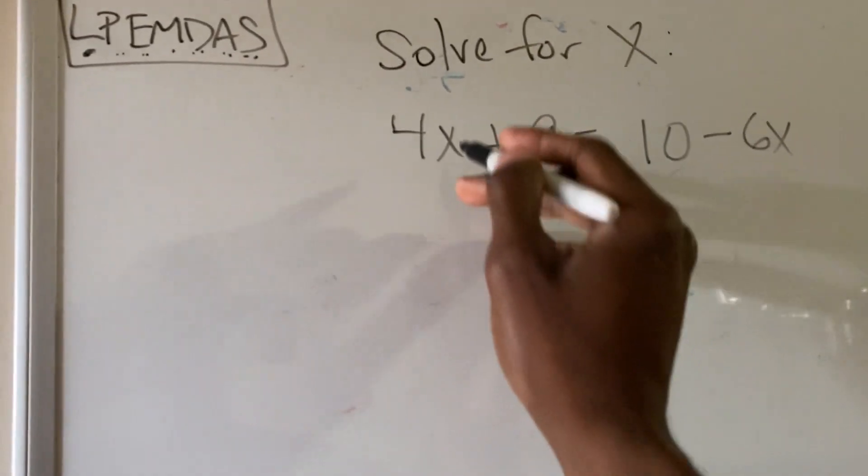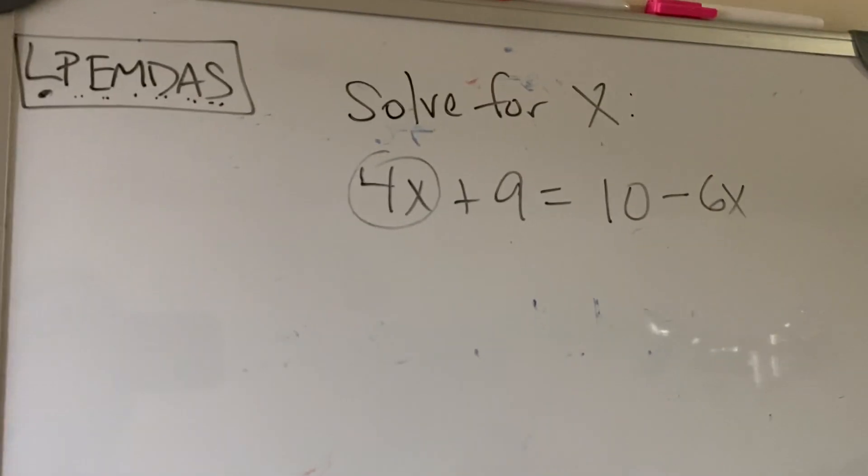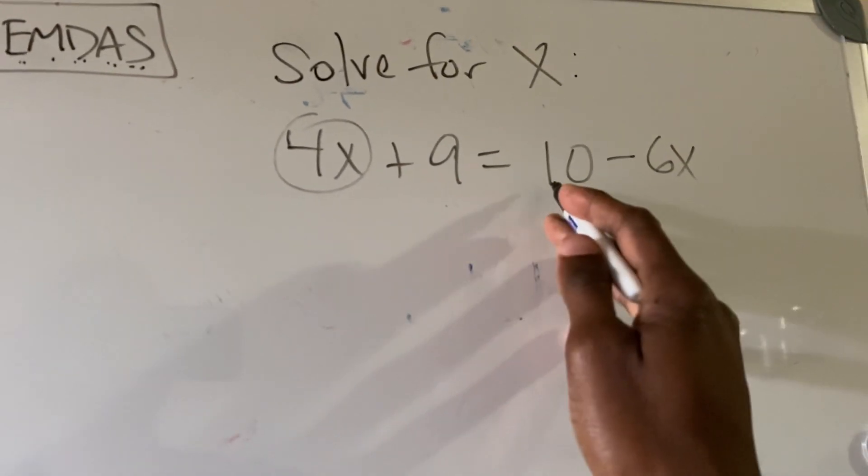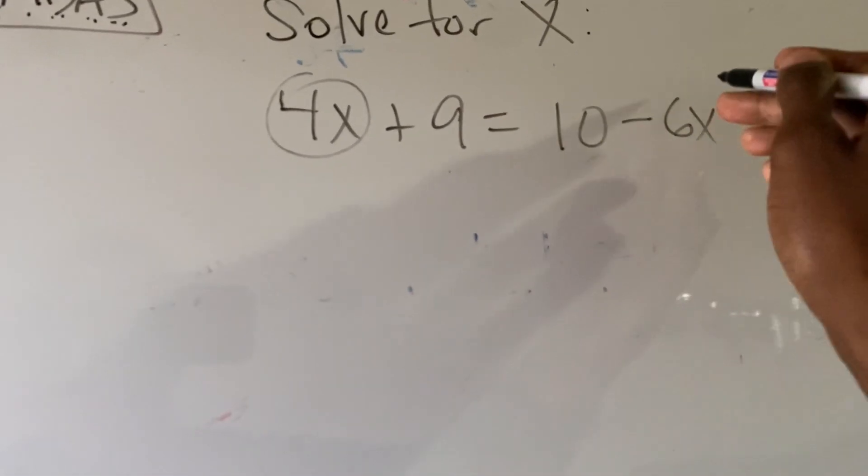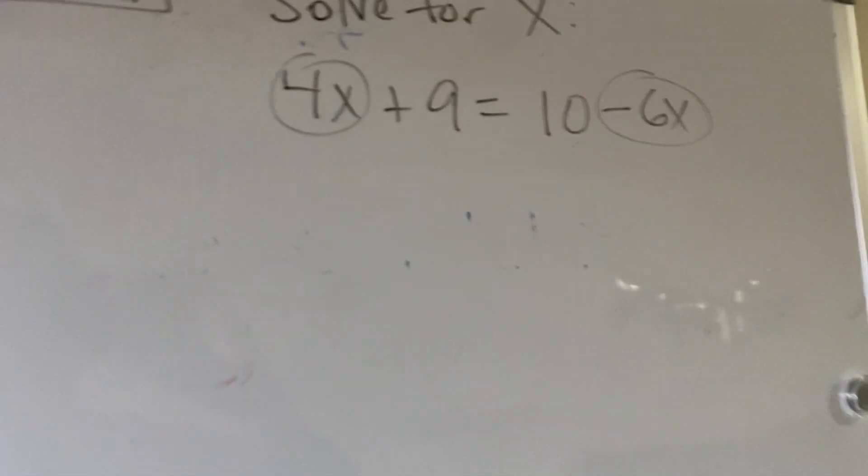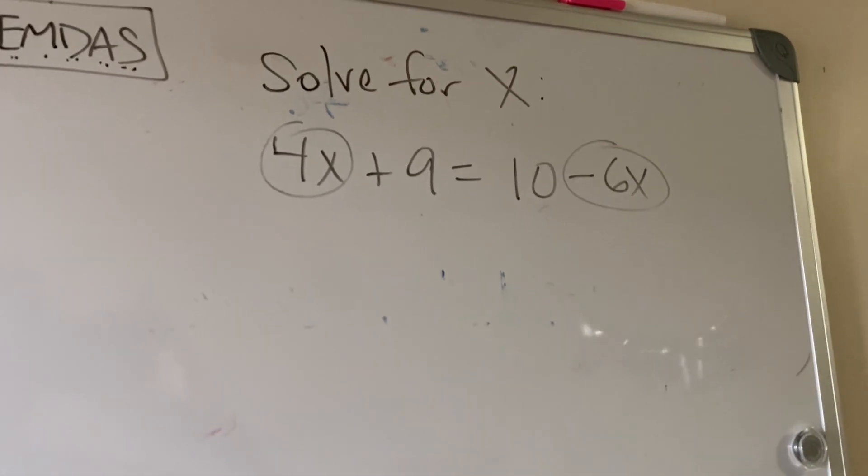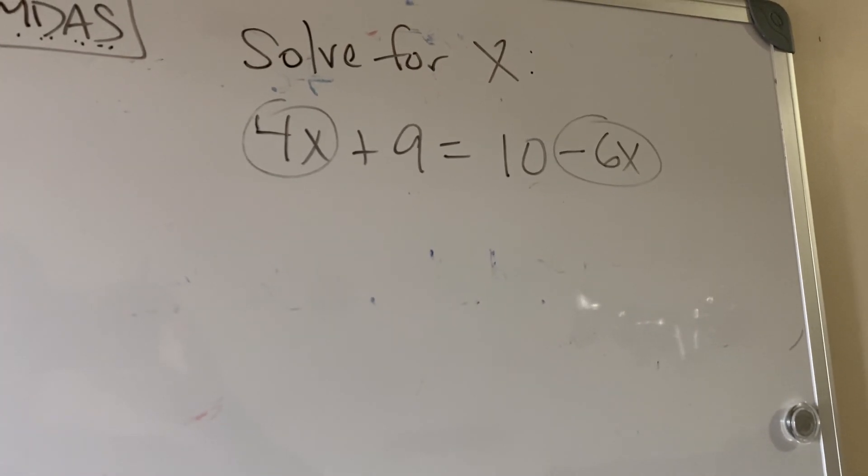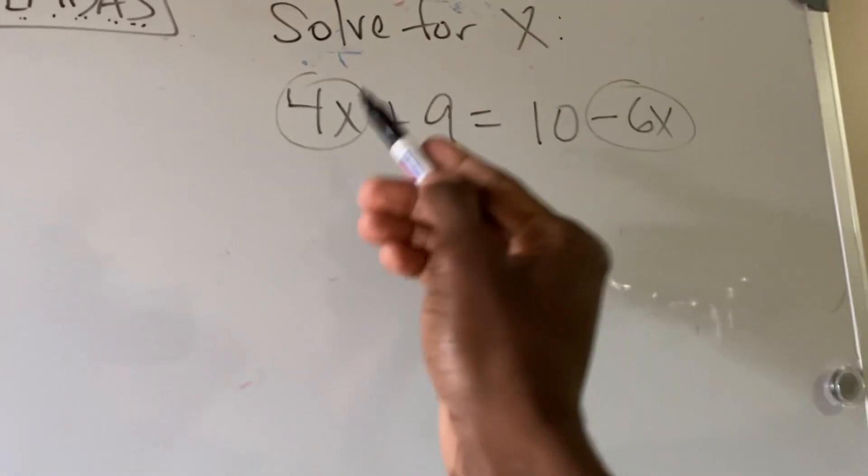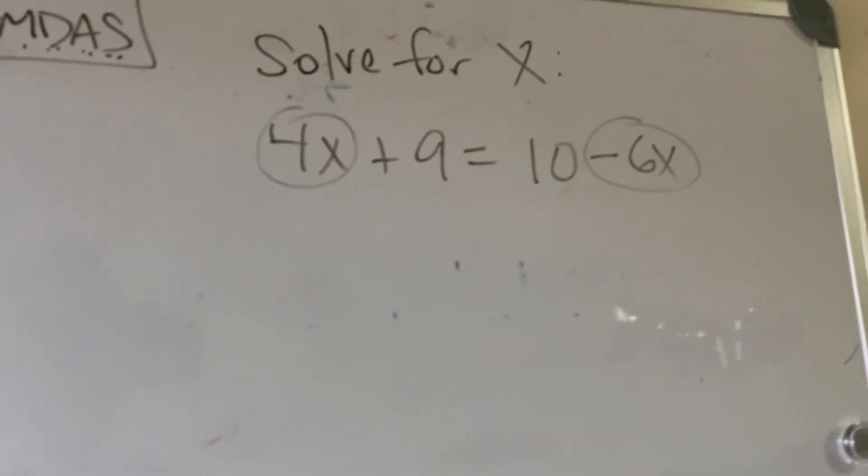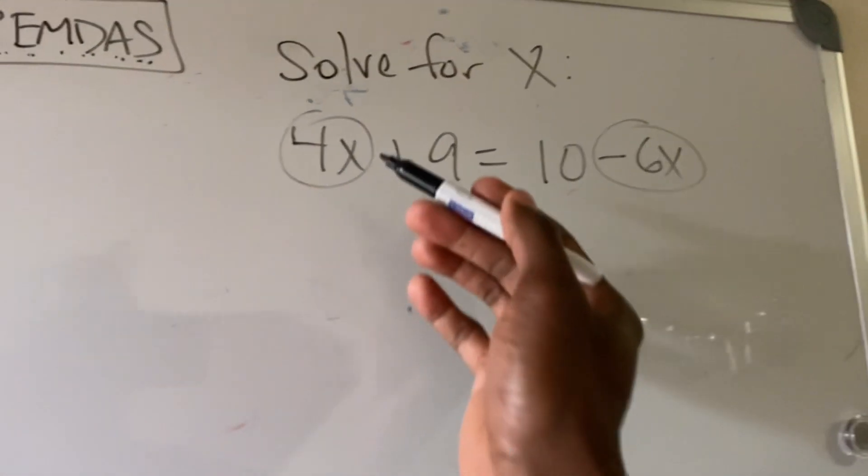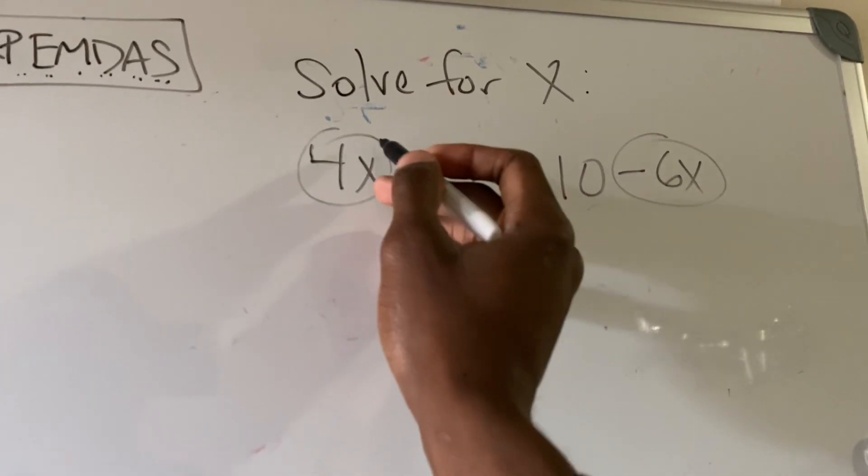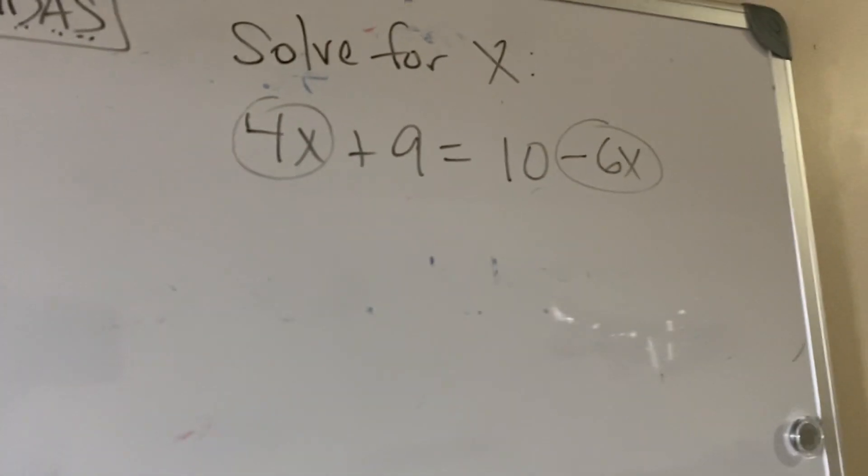Like term 4x, okay. Let's see what's a like term with that. Is it 9? Nope. 10? Nope. Negative 6x? Yes. The reason they're like terms is because a like term has the same variable and the same exponent. So the variable is x, they have the same one, and then the exponent is nothing there, but if we did put something there, the equivalent would be a one. So they have the same exponent and the same variable.